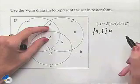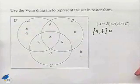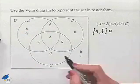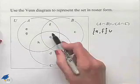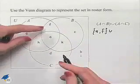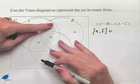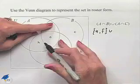We now want to union that with the intersection of A and C. So let's look at the circle for A intersected with the circle for C. That region would include the elements A and H.